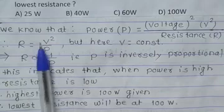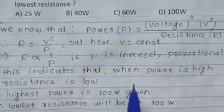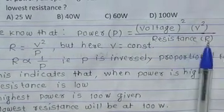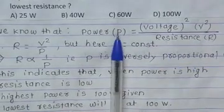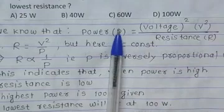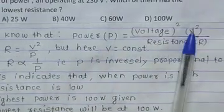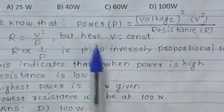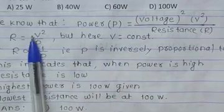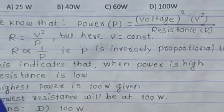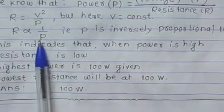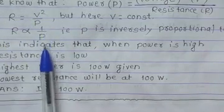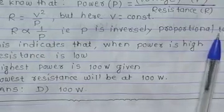We know that power P is given by voltage square, V square, upon resistance R. So R is equal to V square upon P. This means R is inversely proportional to P.